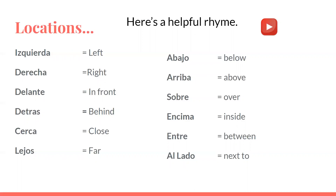There's a very helpful rhyme with this: Izquierda, derecha, delante, detrás. Cerca y lejos, y algo más. Abajo, arriba, sobre, encima, entre, al lado, se termina la rima. And if you click on the button when you're inside the notes, you'll see someone performing this rhyme.